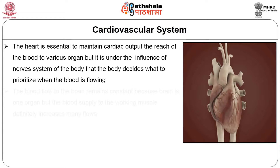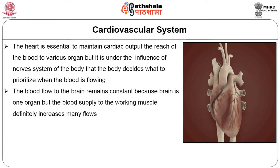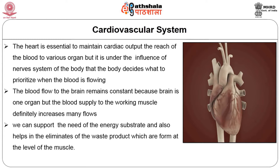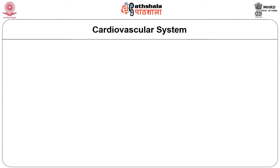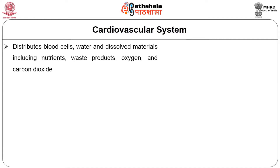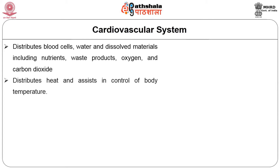The heart maintains cardiac output and the reach of blood to various organs under the influence of the nervous system, which decides what to prioritize. During intense exercise, brain blood supply remains constant as it cannot be reduced, but blood supply to working muscles increases many-fold to support energy substrate needs and eliminate waste products. The cardiovascular system distributes nutrients, maintains hydration, and removes waste products across the body.